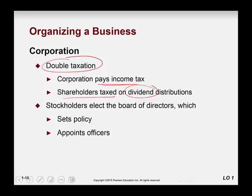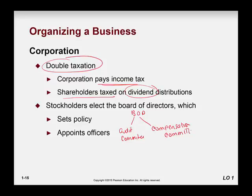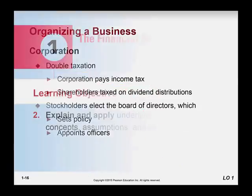Corporations also elect a board of directors, which has two subsets: an audit committee and a compensation committee. The compensation committee usually discusses the compensation of the CEO. As you can see, there are several acronyms, so it's very important to keep track of those.